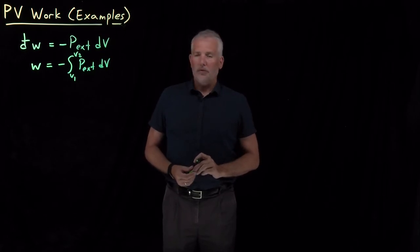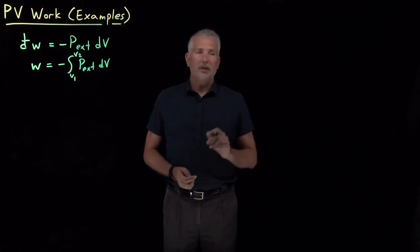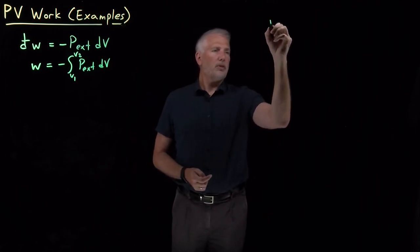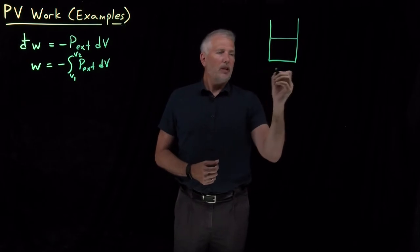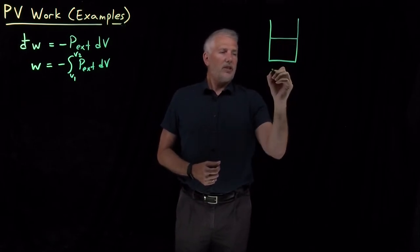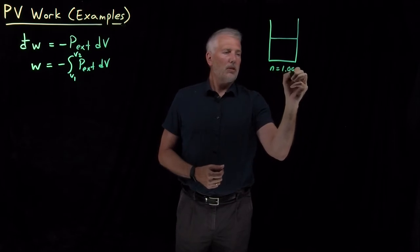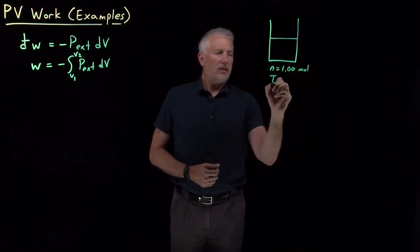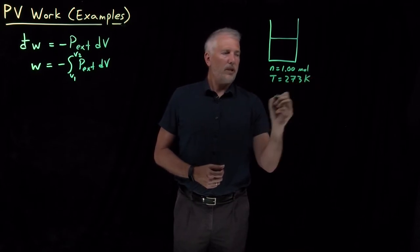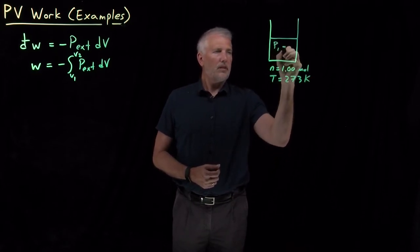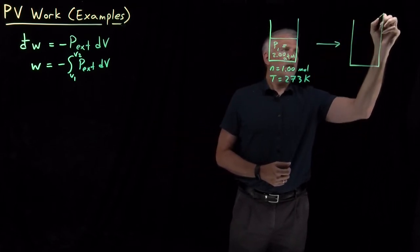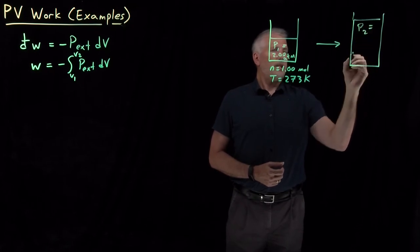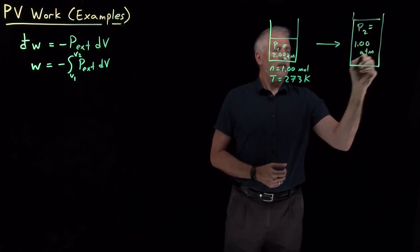We can do this for a couple of different types of expansion. Let's consider the same two expansions - the reversible and irreversible expansion - that we used to illustrate the idea of reversibility and irreversibility. Let's say we have one mole of a gas at 273 Kelvin, initially at two atmospheres, and as we expand the gas, we're going to let the pressure decrease to one atmosphere.